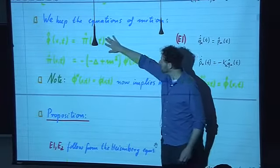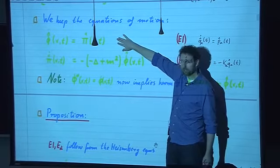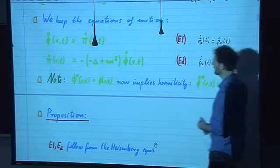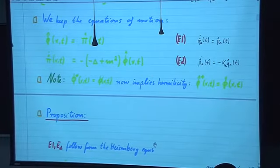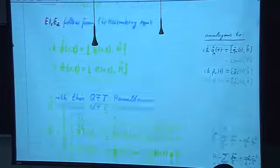This Hamiltonian, together with the usual Heisenberg equations of motion — namely that the time derivative of an observable is given by the commutator of that observable with the Hamiltonian — gives us, when you work it all out using the commutation relations, exactly those two equations of motion. We went through the derivation in detail, and this was homework.